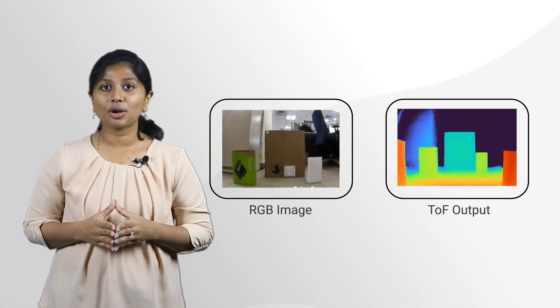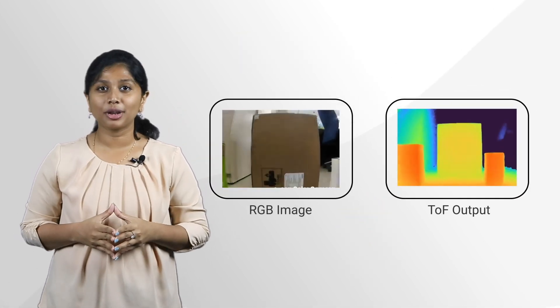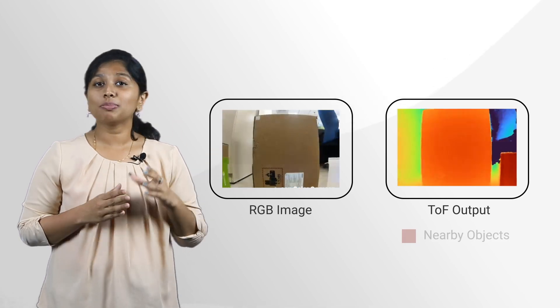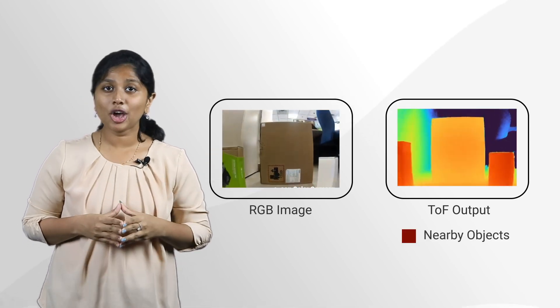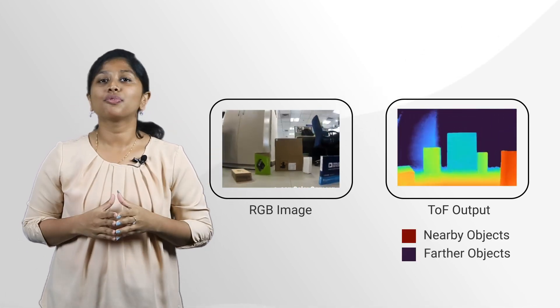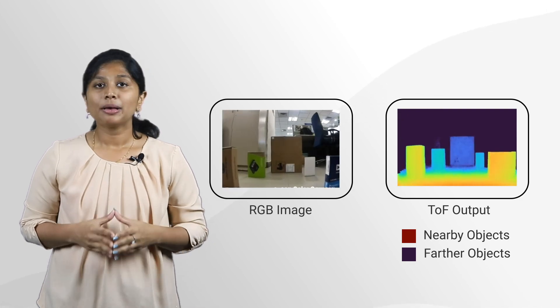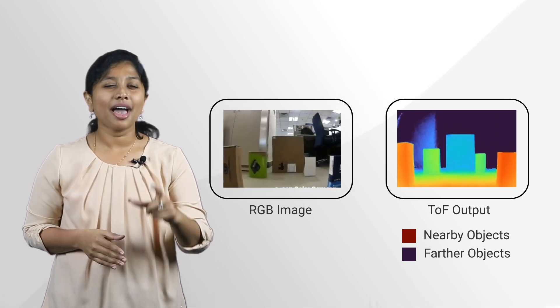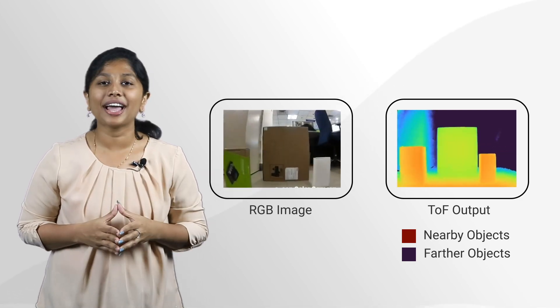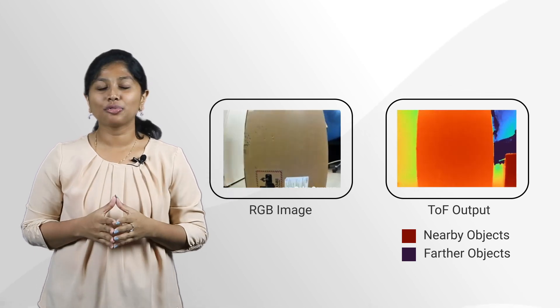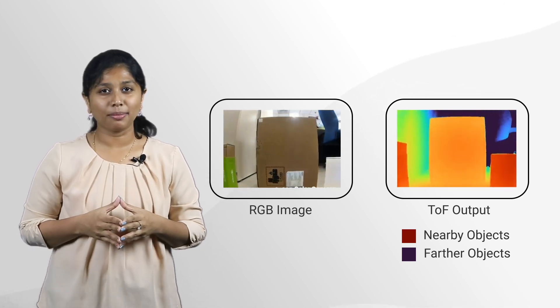To help you understand the concept better, here is what the output from a time-of-flight camera looks like. This is a depth map where the red color represents nearby objects and the blue color represents farther objects in the scene. Feel free to take a moment and have a close look at the image.